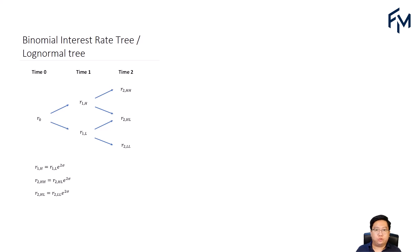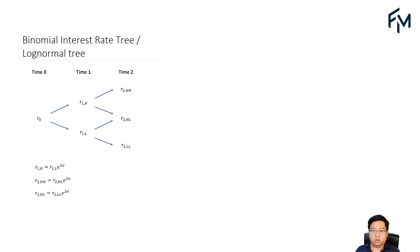In this video, I'm going to show you how the relationship between the lower and upper node of a binomial interest rate tree is established. The binomial interest rate tree can be used to determine the arbitrage-free value of a fixed income security. It is also called the log-normal tree because the interest rates are assumed to be log-normally distributed.